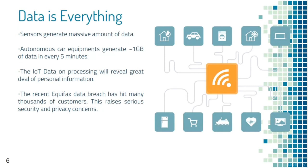IoT data is the most important part of these scenarios. Equipment built into autonomous carts generates about 1GB of data every 5 minutes. This huge volume of data can reveal a great deal of personal information, as seen in recent events like the Equifax hack which affected thousands of customers. Such situations raise serious security and privacy concerns.